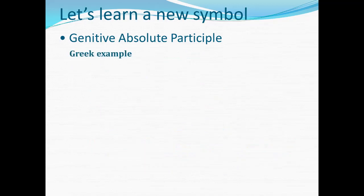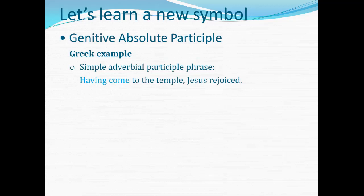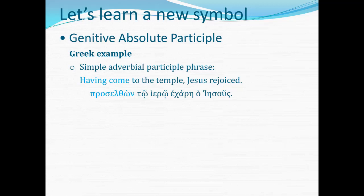Now let's put this into Greek so we can see it operating in Greek terms. Here we have again the simple adverbial participle phrase: 'Having come to the temple, Jesus rejoiced.' In Greek, proselthon is the participle written in the masculine singular nominative, agreeing with ho Iēsous. Now you may look at the ending on proselthon and say that looks like genitive plural — yes, genitive plural words do end in omega-nu, but the genitive plural form of this participle would be proselthonton. This is why in Greek you have to learn whole word forms and not just endings, because various forms can share the last few letters without being the same form at all. This is the masculine nominative singular form of that second aorist active participle.